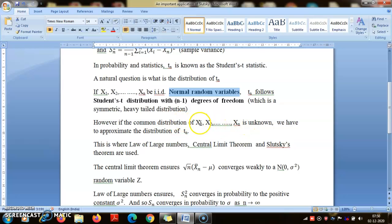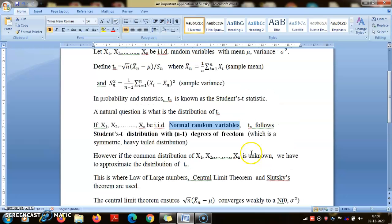But in general, the point is that we have the data; we don't know what distribution or population it is coming from. So we need to know the sampling distribution of Tn.